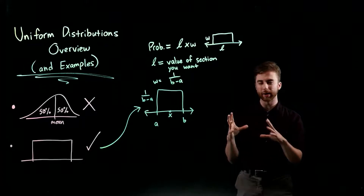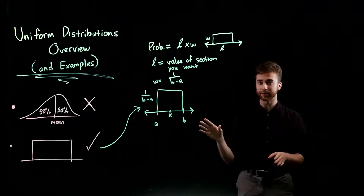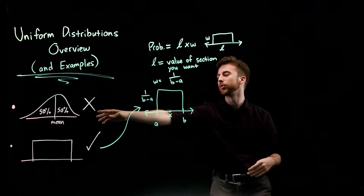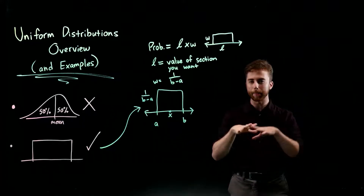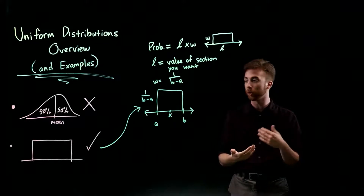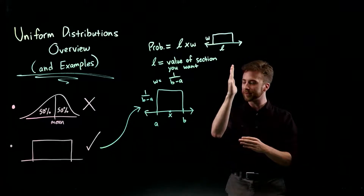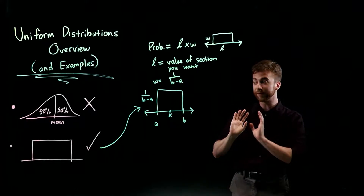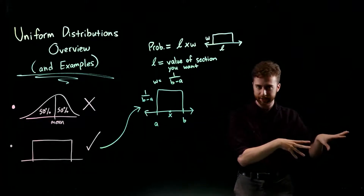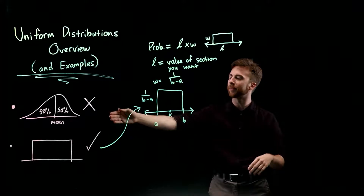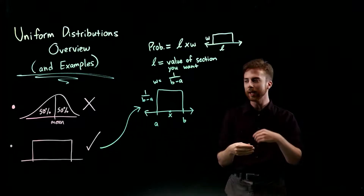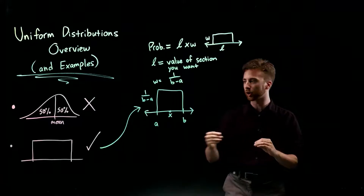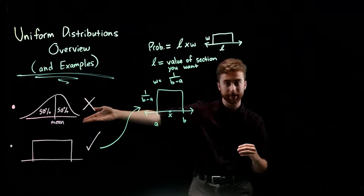To summarize what a uniform distribution is and how it differs from previous probability distributions, you can see right here we have a normal distribution — that bell-shaped curve where the mean is in the middle, with 50% of outcomes on each side. The further away we get from the mean, the less likely that outcome is to occur, hence the shape of the bell-shaped curve.